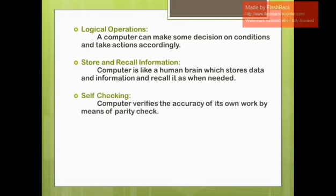Self-checking: a computer verifies the accuracy of its own work by means of a parity check. When a computer is doing a job, it can check itself. For example, in MS Word, when you type something incorrectly, it shows a red underline and then you can correct it. So this is a very important part of self-checking.